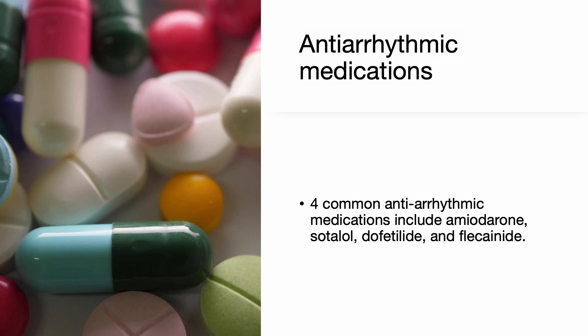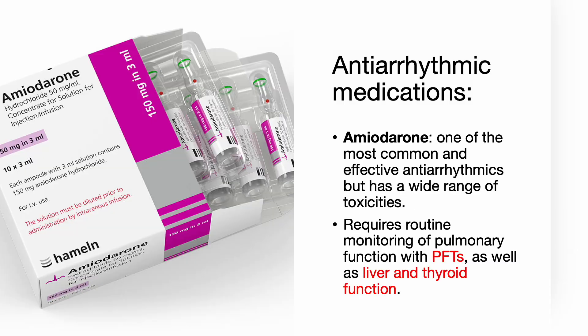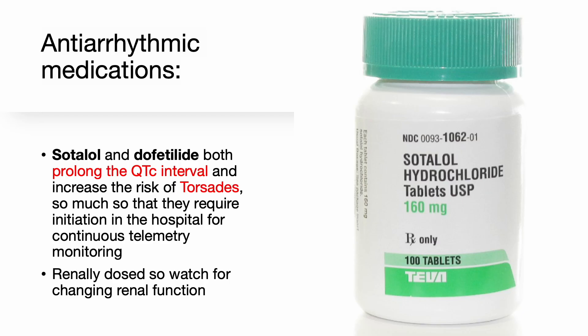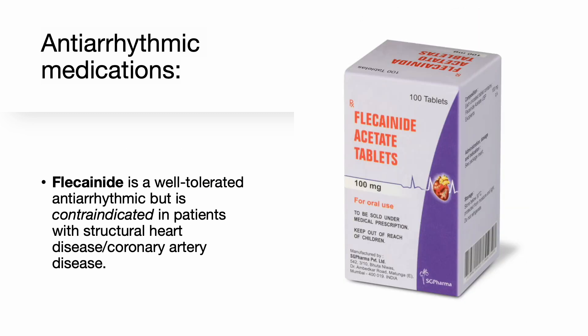Four common anti-arrhythmic medications for atrial fibrillation include amiodarone, sotalol, dofetilide, and flecainide. Amiodarone is one of the most common and effective anti-arrhythmics but has a wide range of toxicities, requiring routine monitoring of pulmonary function with PFTs, as well as liver and thyroid function. Sotalol and dofetilide both prolong the QTc interval and increase the risk of torsades de pointes, so much so that they require initiation in the hospital for continuous telemetry monitoring, and are renally dosed. Flecainide is well tolerated but is contraindicated in patients with structural heart disease or coronary artery disease.